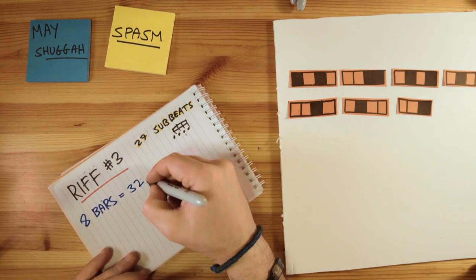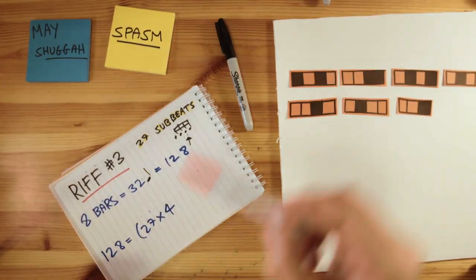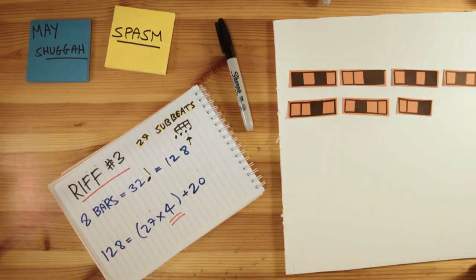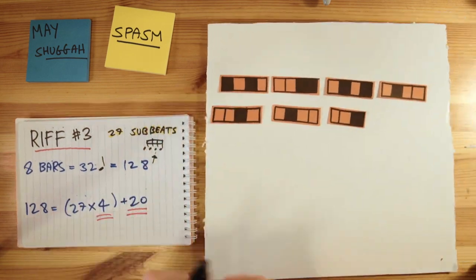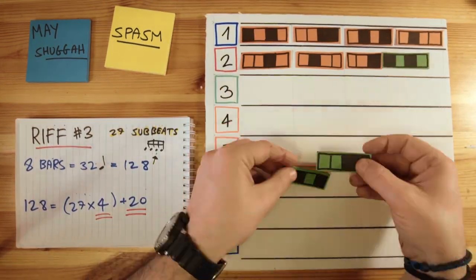So numbers, numbers, numbers, we get 4 full rips with a remainder of 20 sub-bits, which is again gonna be played as, yeah, you get it.